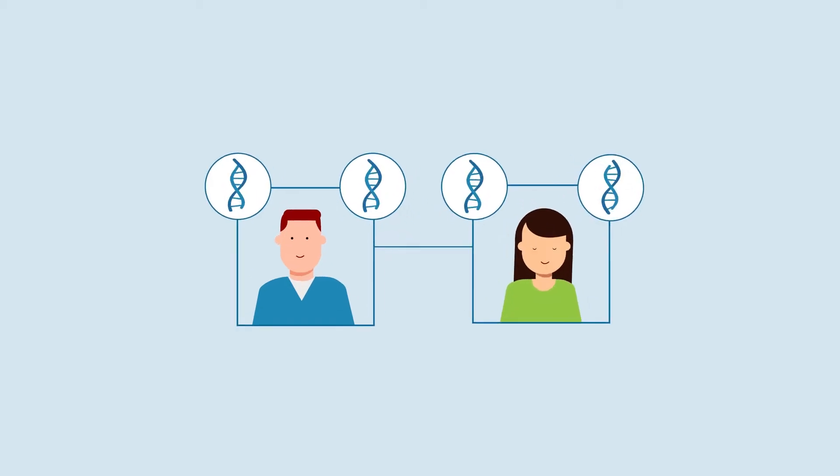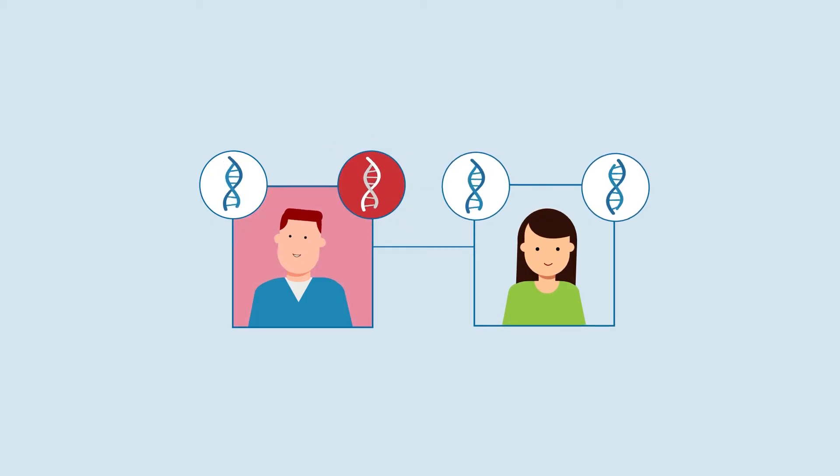Autosomal dominant conditions can develop when one copy of a gene does not work properly, even though the other copy of the gene is still working normally.